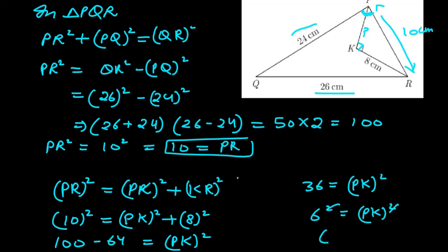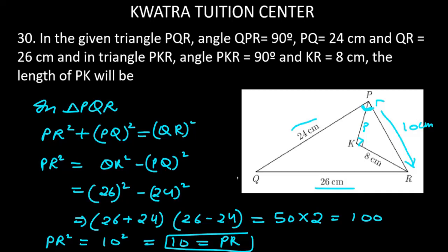Square and square can be cancelled and you get the answer as 6 centimeter. So yes, PK is 6 centimeter in this case. Now we'll be moving to question number 31, the next one.